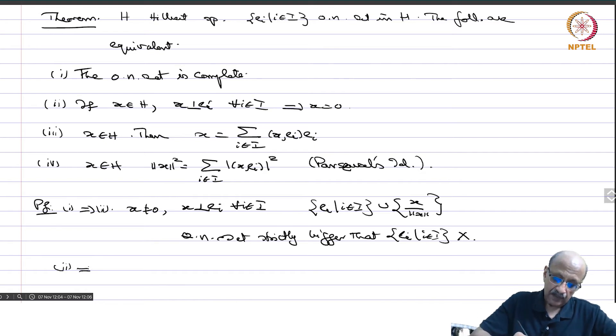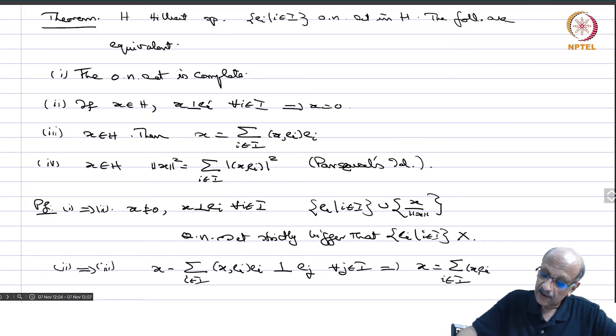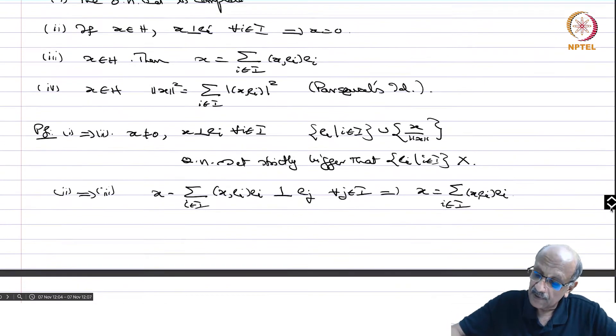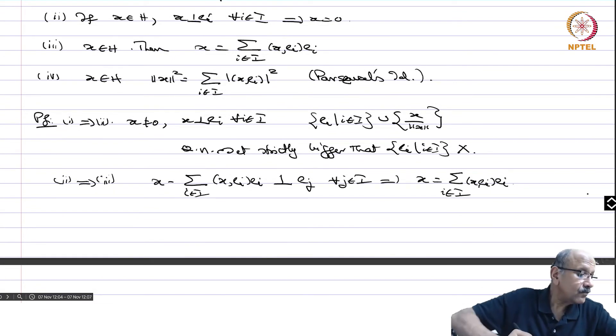2 implies 3. We already saw that sigma x i in I, x EI, EI is orthogonal to EJ for all J in I, implies this is implies x equals sigma i in I, x EI, EI because that has to be 0.